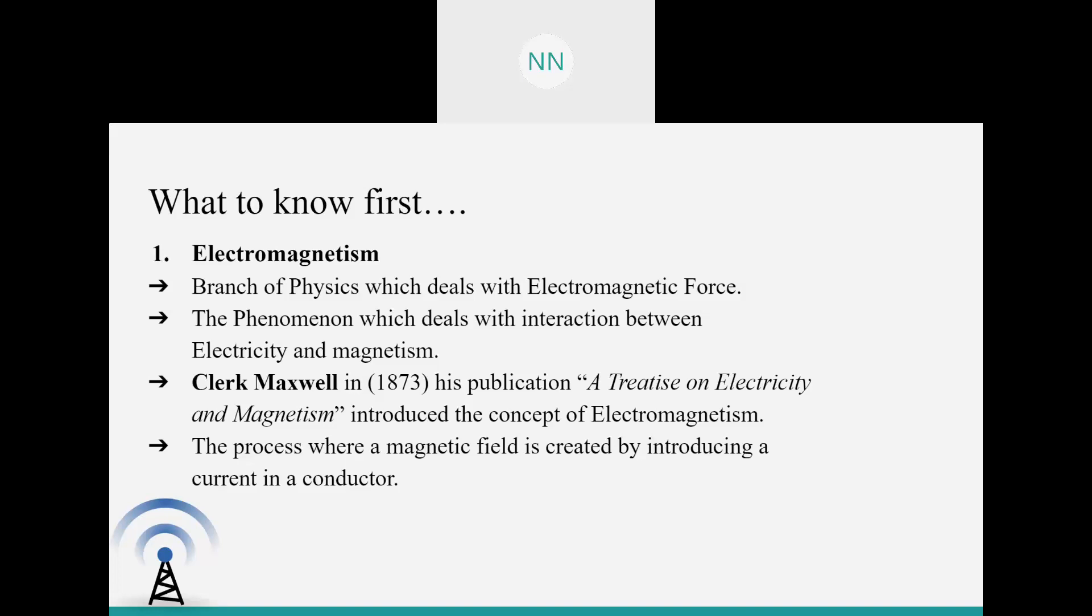Simply as a definition, we can say that electromagnetism is the phenomenon which deals with the interaction between electricity and magnetism. Until 1873, electricity and magnetism were treated as two different entities. Until Clark Maxwell, in his publication, a thesis on electricity and magnetism, introduced the concept of electromagnetism. From then on, many scientists have made their contribution to electromagnetism. The theory of electromagnetism states that a current carrying conductor will have a magnetic field around it.